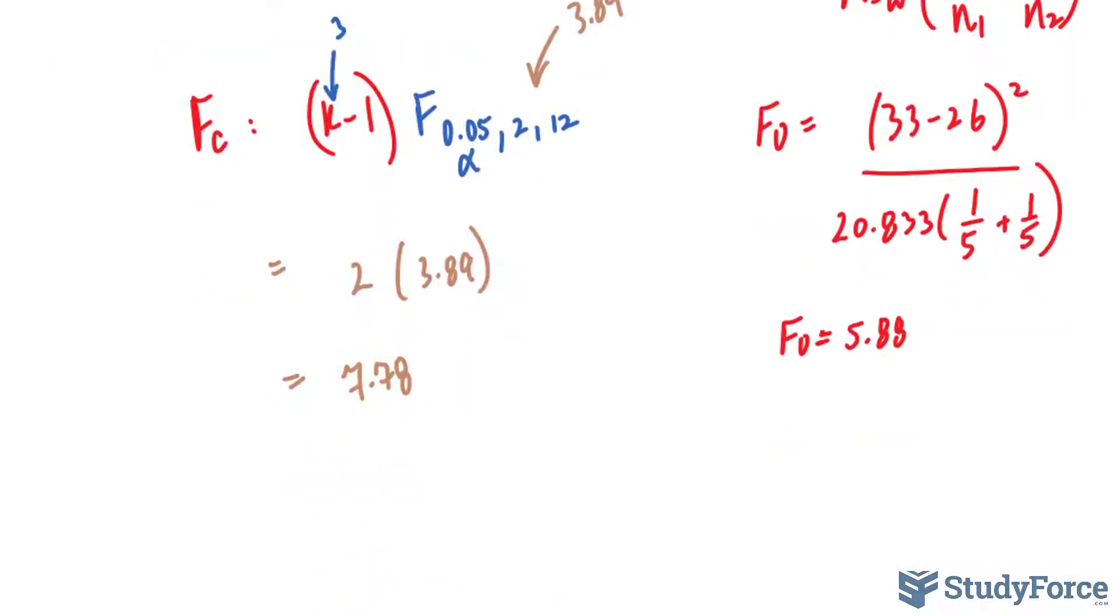If I draw this number out on an F distribution chart, this is what its pattern looks like. 7.78 is, let's say over here, and because this is less than the F critical that we found, it falls somewhere here, this value, it doesn't fall in this rejection region.